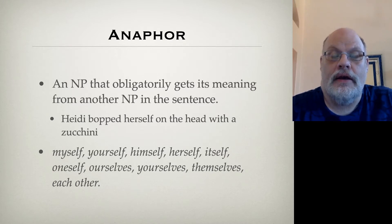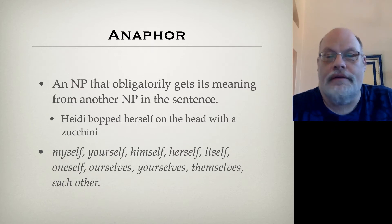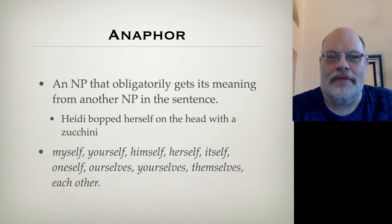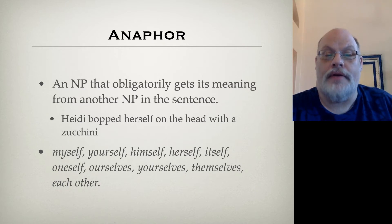For example: 'Heidi bopped herself on the head with a zucchini.' 'Herself' here is an anaphor because it gets its meaning — its reference — from the name Heidi, which precedes it in the sentence. 'Herself' here cannot refer to anyone else. By the way, this sentence is about my good friend Heidi and describes a little food fight where we were using vegetables to get the better of one another. No real violence was committed. So anaphors are NPs that obligatorily get their meaning from other noun phrases in the sentence.